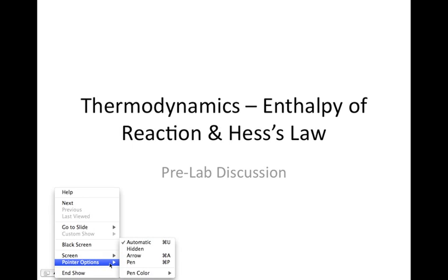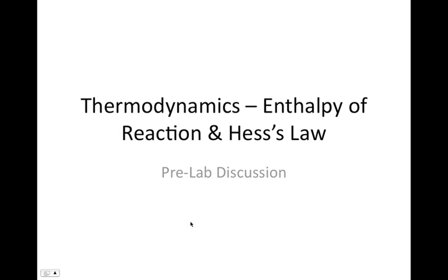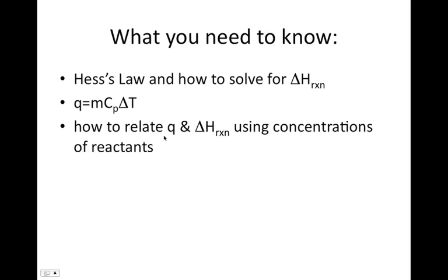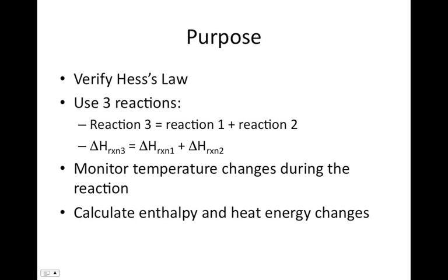This is your pre-lab discussion for the Hess's Law Lab, AP Lab number 13. What you're going to need to know for this lab — and this is basically addressed by all of your pre-lab questions — so if you understand how to calculate your pre-lab questions, you shouldn't have any problems on the calculations for the actual lab itself. You're going to need to know Hess's Law, how to solve for the delta H of reaction, you're going to need to know Q equals MCpΔT, and you're going to need to know how to relate Q and delta H using the concentrations of your reactants. All of these are pre-lab questions.